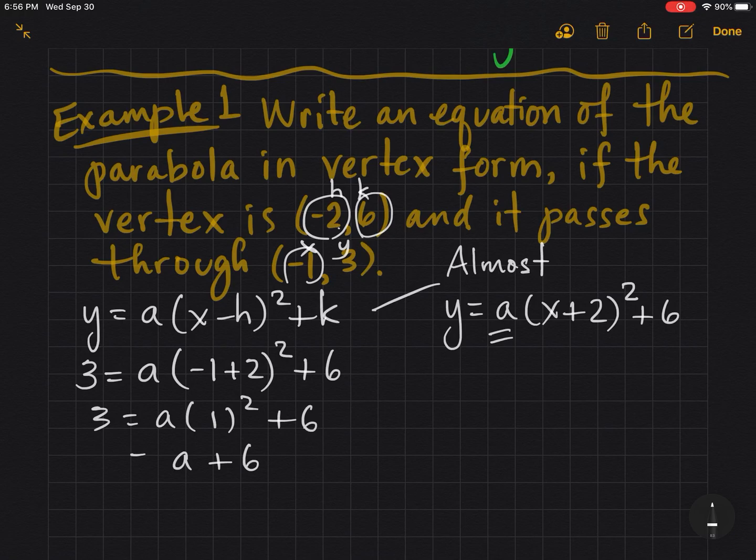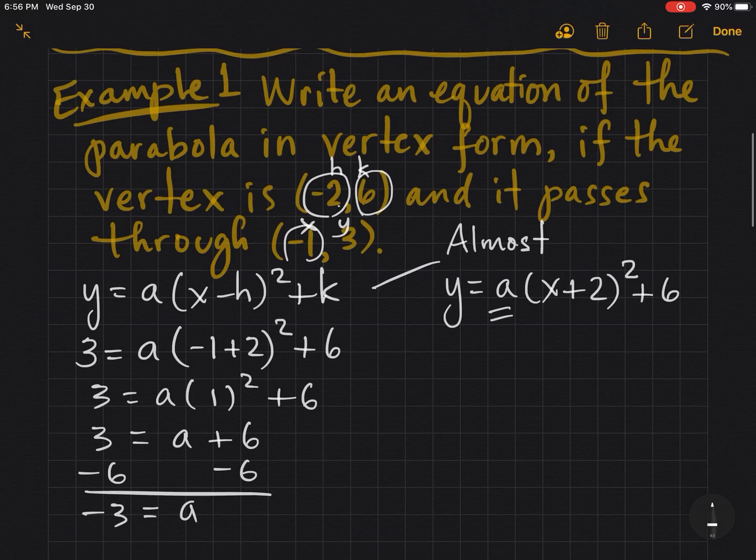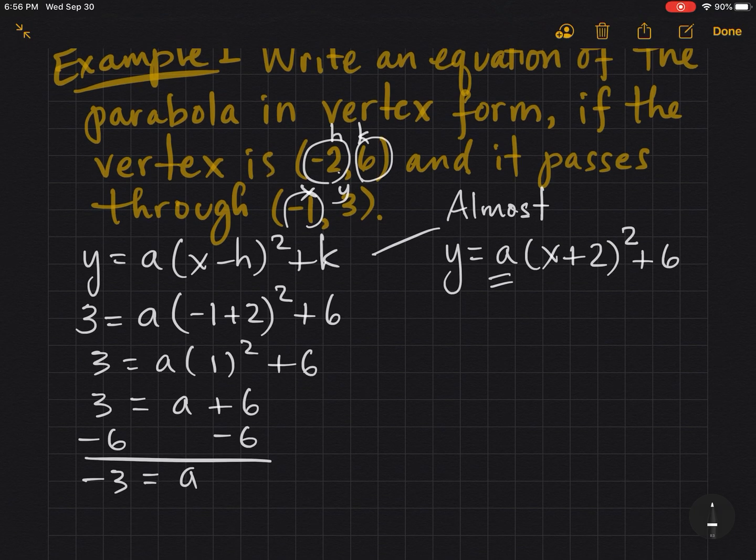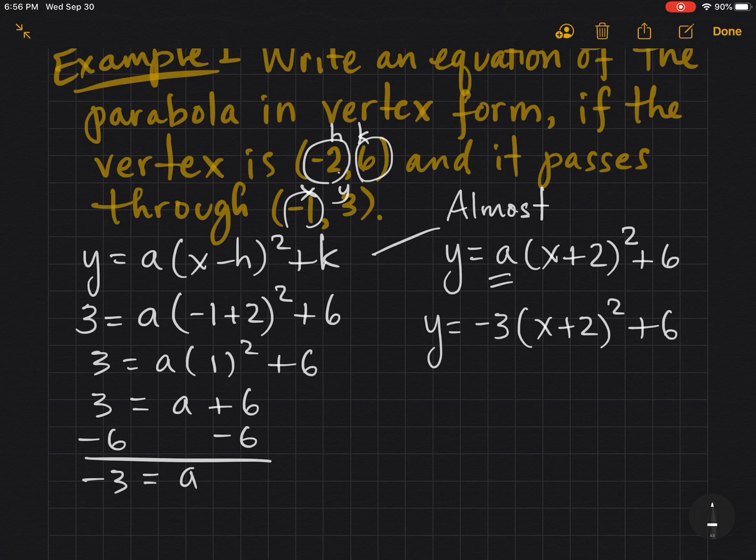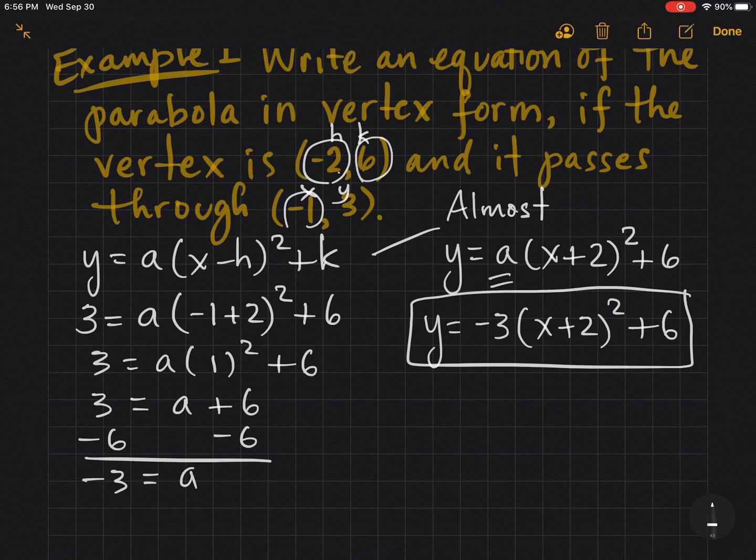We're looking at 3 = a(1)² + 6, so one squared is one, so that's just a + 6. Subtract 6 from both sides and a = -3. So now we have our answer: y = -3(x + 2)² + 6. Final answer.